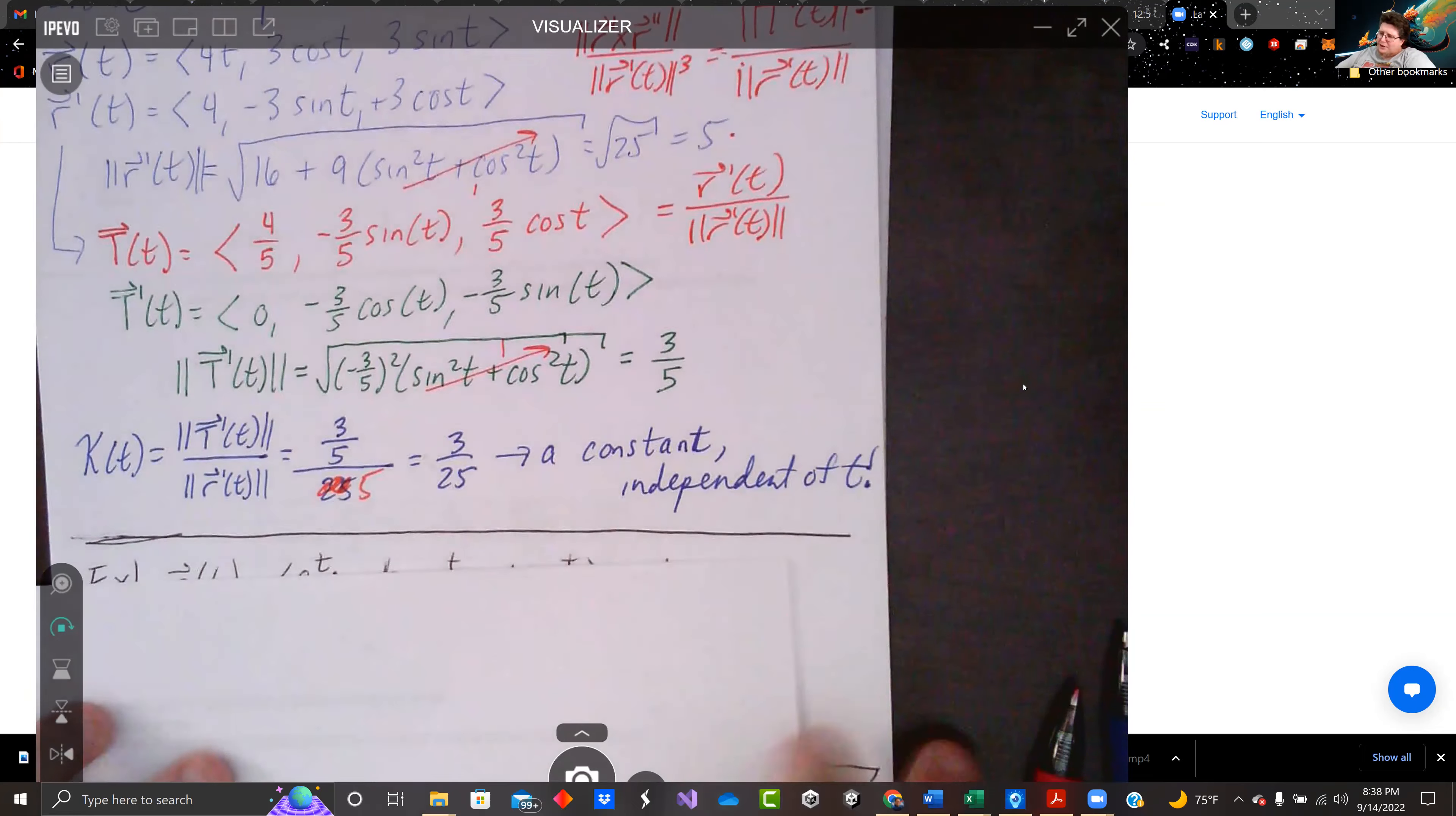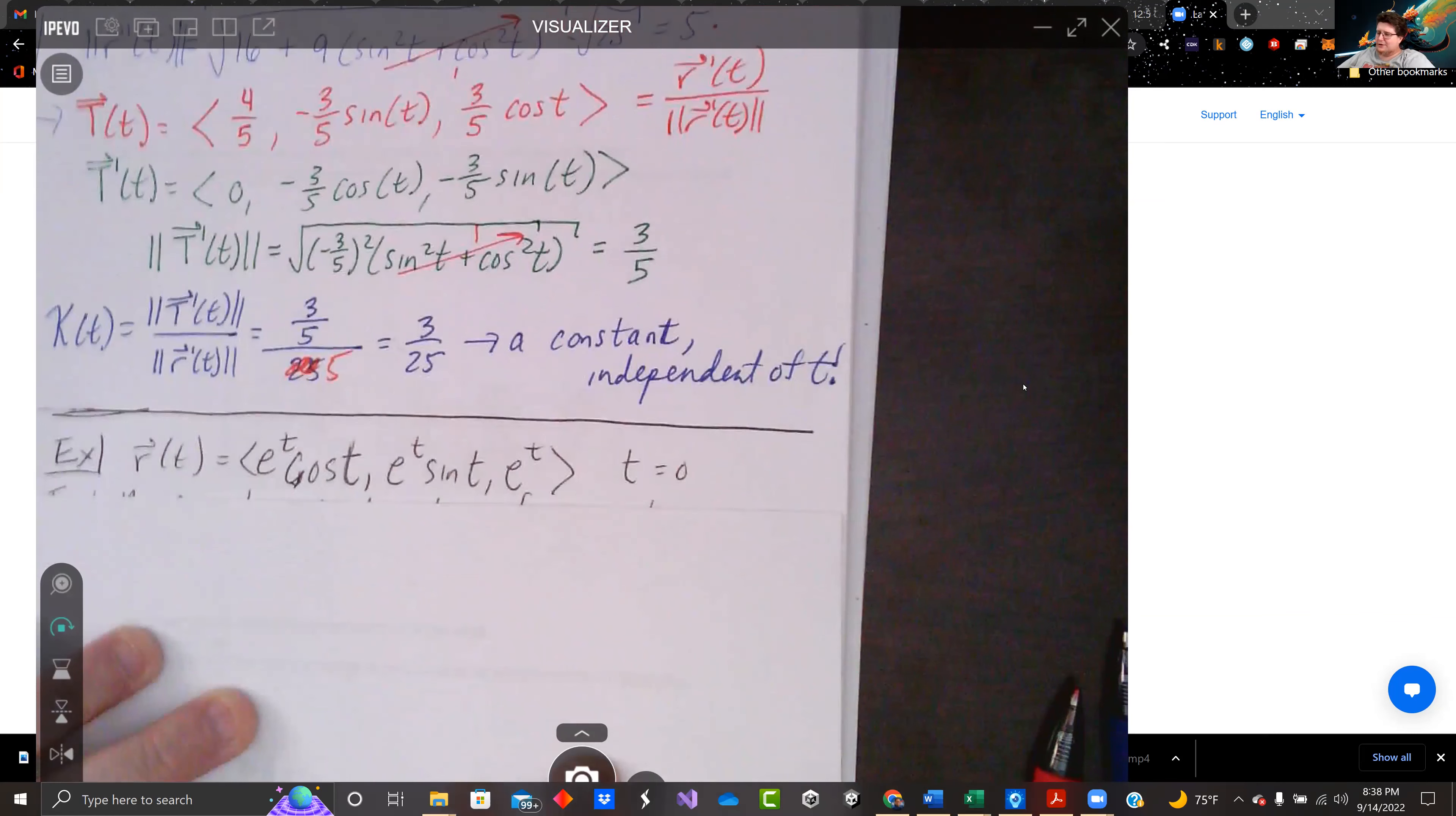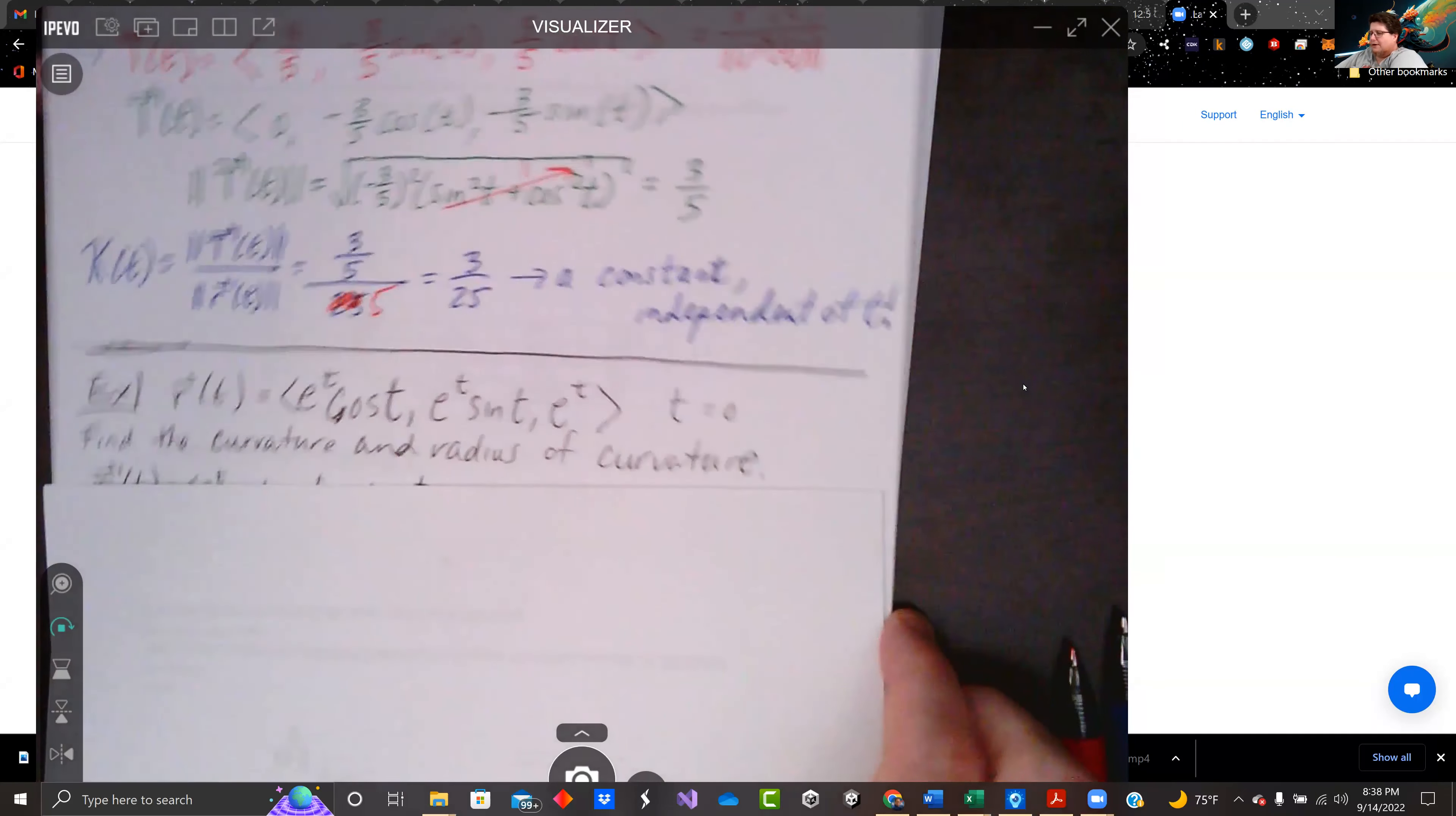Let's take a look at another one. Let's do r of t equals e to the t cosine t, e to the t sine t, and e to the t for the z component. We're going to use t equals 0, and we're going to find curvature and radius of curvature.